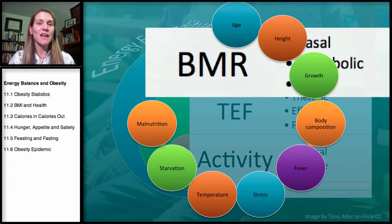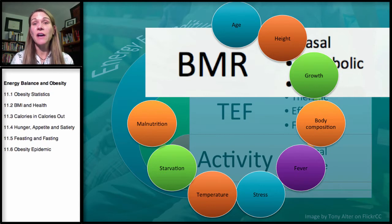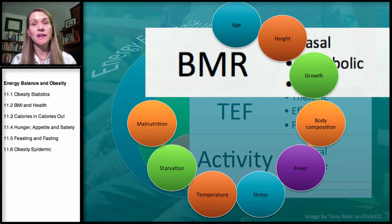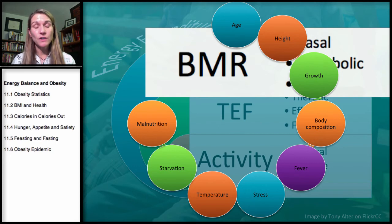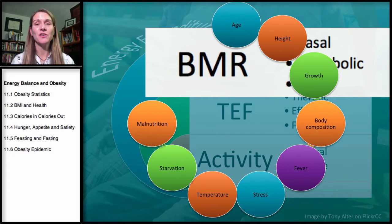When BMR drops during starvation, the body almost tries to meet the reduced calorie intake. That's why on a very calorie-restricted diet you lose weight, but not as much as a simple calories-in versus calories-out calculation would suggest. Your body knows how to compensate — it learned to survive during times of food scarcity and still falls back to that response.